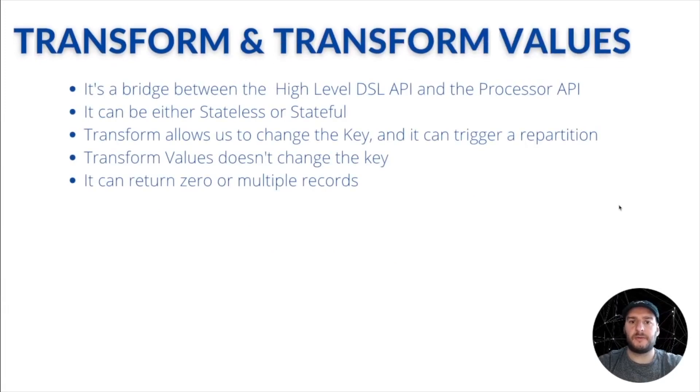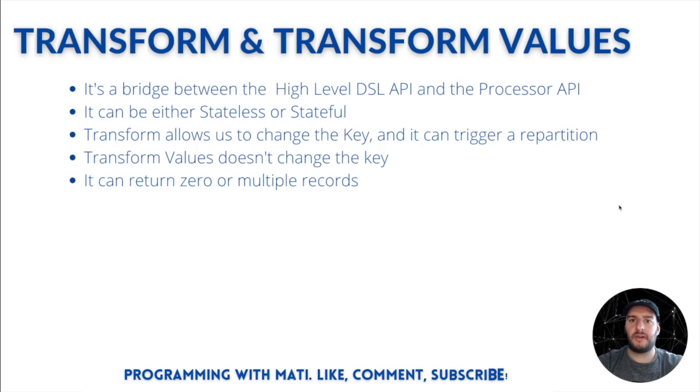Transform and transform values are a bridge between the high level DSL API and the processor API. It can be either stateless or stateful. Transform allows us to change the key, meaning that it can trigger a repartition. Transform values doesn't change the key, so it avoids repartition. And both of them can return zero or multiple records.